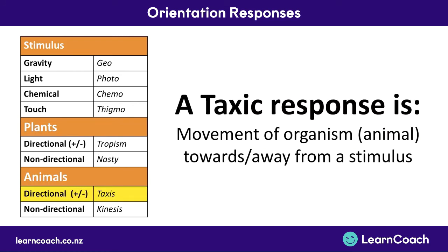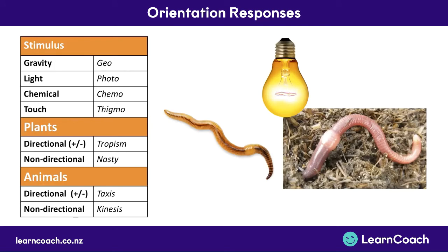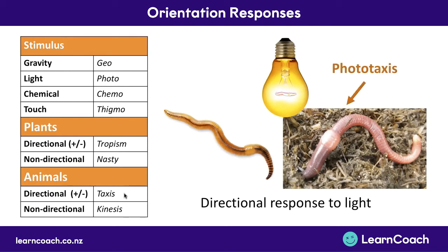Now let's move on to animals. In animals, the directional response is called a taxic response or taxis — any movement of an animal towards or away from some kind of stimulus. For example, if you turn on a light next to a worm, it will burrow right into the ground to get away. This is a directional response to light, so we use 'photo' and 'taxis' — photo taxis. Because the worm is moving away from the light, this is negative photo taxis.